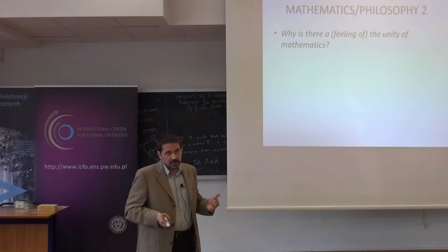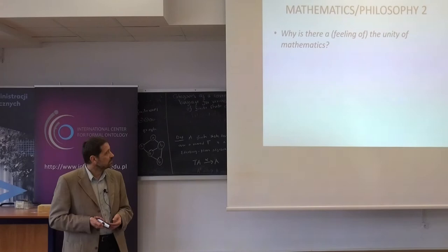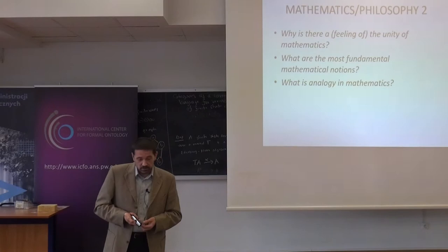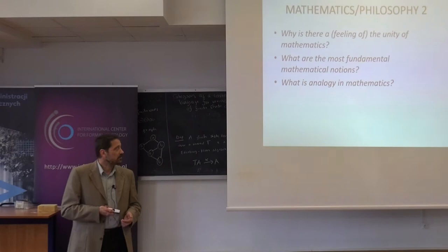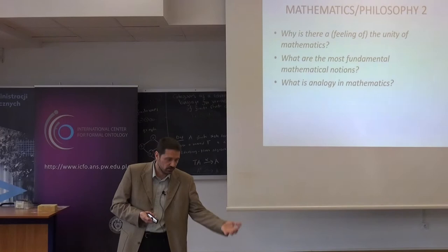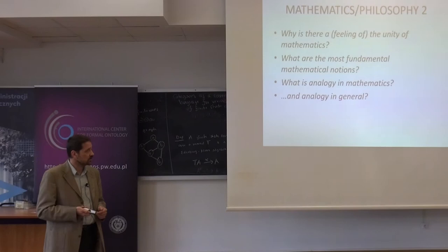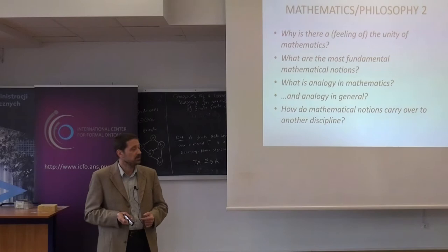Why is there a feeling of the unity of mathematics? I think this is an empirical fact — there is a feeling that mathematics is one subject, not two hundred different subjects. What are the most important mathematical notions? What is analogy in mathematics? I think category theory could provide some insights here. The notion of analogy is not a mathematical notion, but perhaps the proper explication is the notion of isomorphism, or maybe of a functor, or something else. What is analogy in general, and how do mathematical notions carry over and get applied to another discipline?